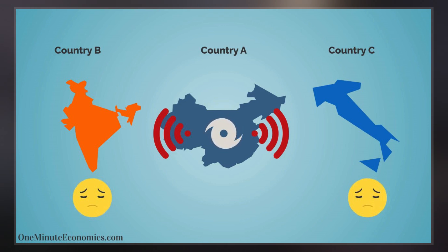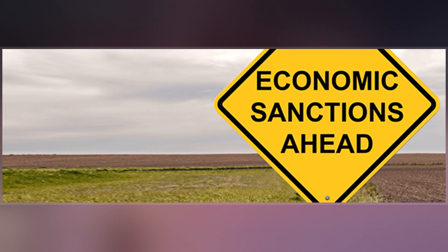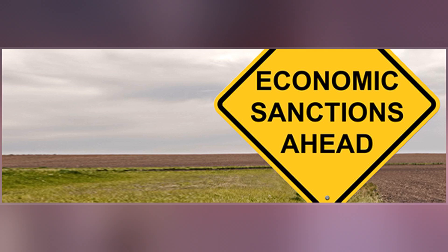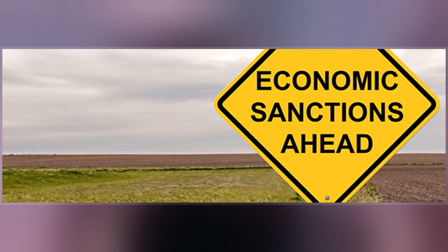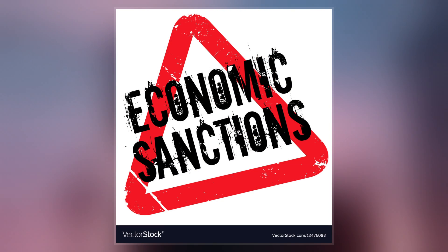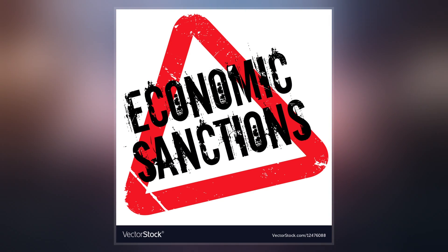Economic sanctions may include various forms of trade barriers, tariffs, and restrictions on financial transactions. An embargo is similar, but usually implies a more severe sanction, often with a direct no-fly zone or naval blockade.